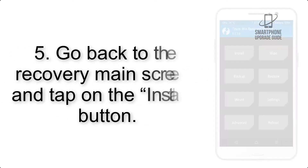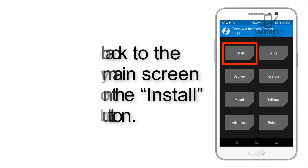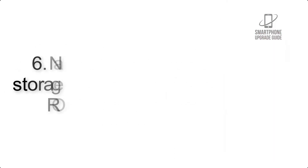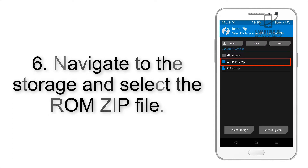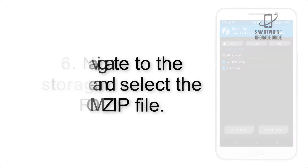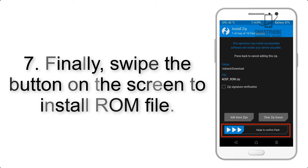Step 4: Swipe the button to wipe the device. Step 5: Go back to the recovery main screen and tap on the Install button. Step 6: Navigate to the storage and select the ROM zip file.